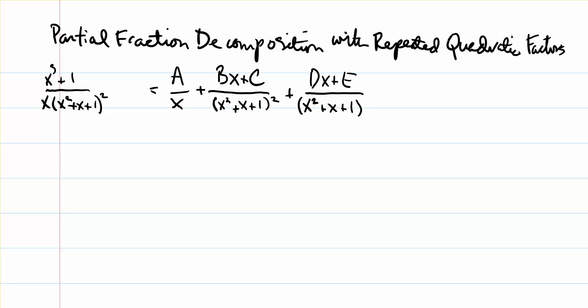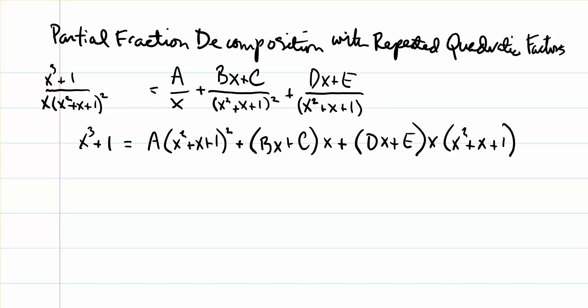The very first thing we want to do is multiply both sides of this by the common denominator. When we do, we end up with x cubed plus 1 equals A times the quantity x squared plus x plus 1 squared, plus the quantity Bx plus C times x, plus the quantity Dx plus E times x times the quantity x squared plus x plus 1. You can pause the video and work through the example yourself to verify.